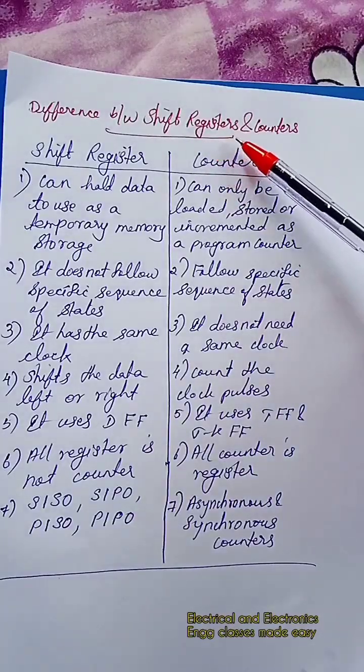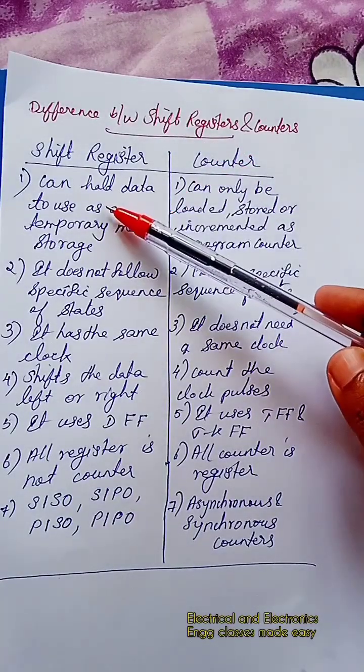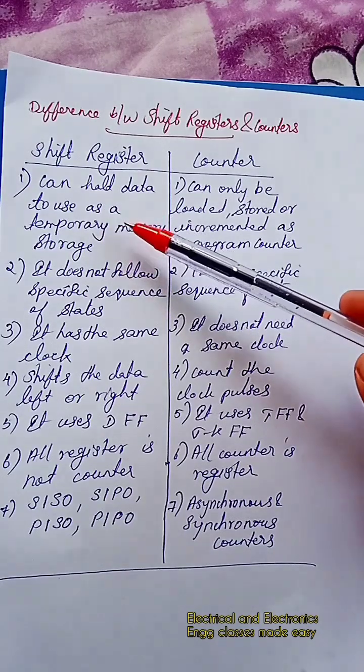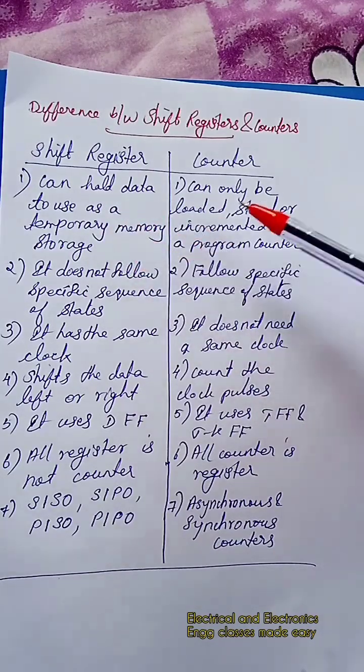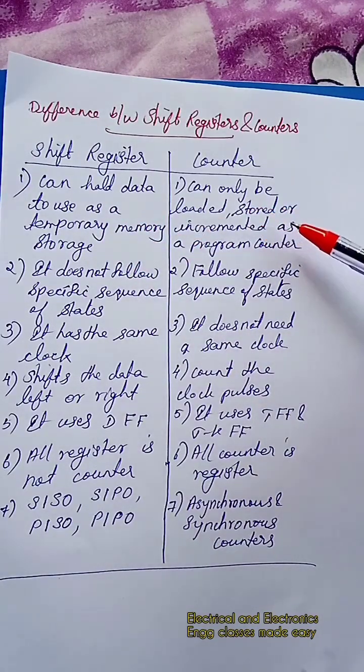Difference between shift registers and counters. A shift register can hold data to use as a temporary memory storage. A counter can only be loaded, stored, or incremented as a program counter.